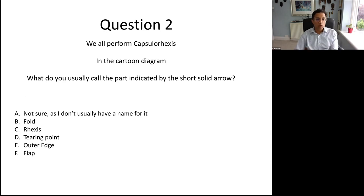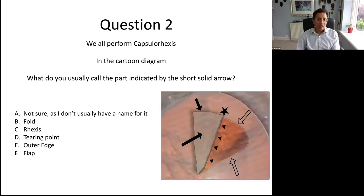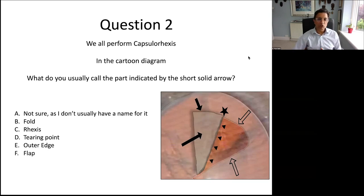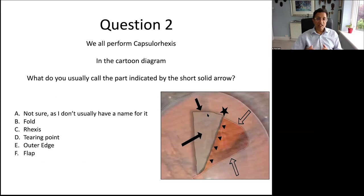Question two: we all perform capsular rexis, and there's a cartoon diagram here. I want to know your terminology — what do you call the part indicated by the short solid arrow? This relates to the nomenclature of teaching surgery; we need a shared common language between trainer and trainee. That part of the rexis flap I call the outer edge — showing that lots of people have different terms for different parts of the anatomy.